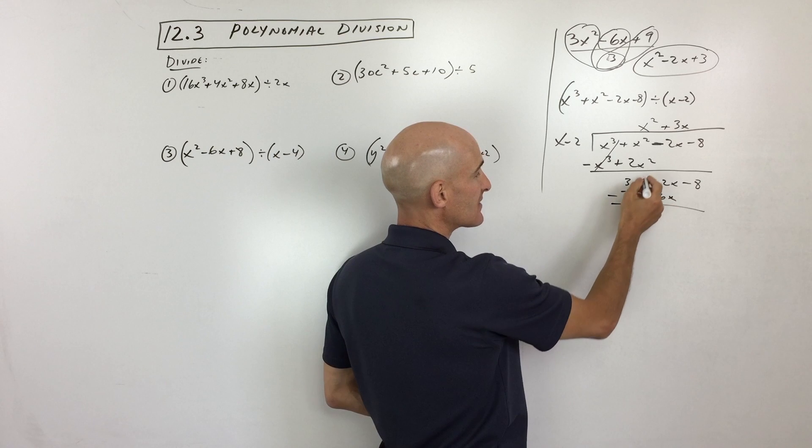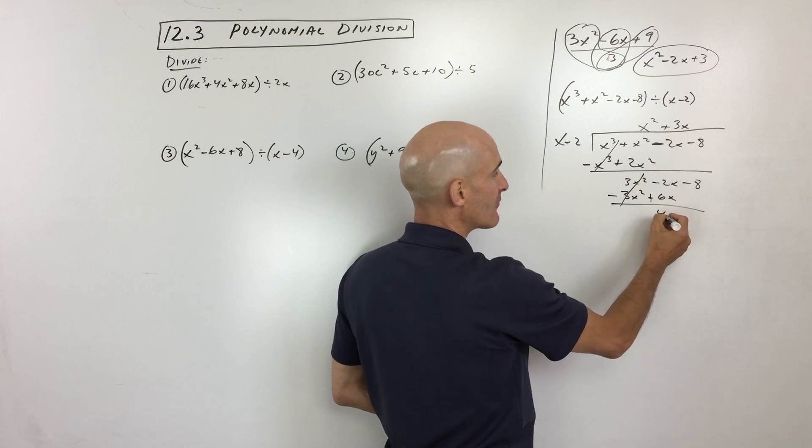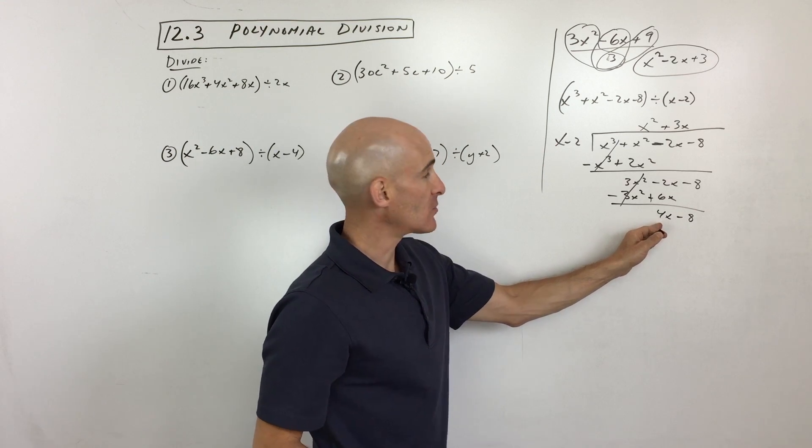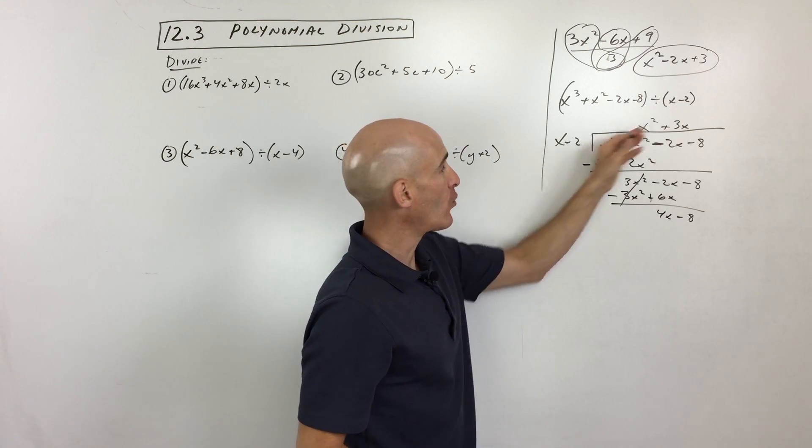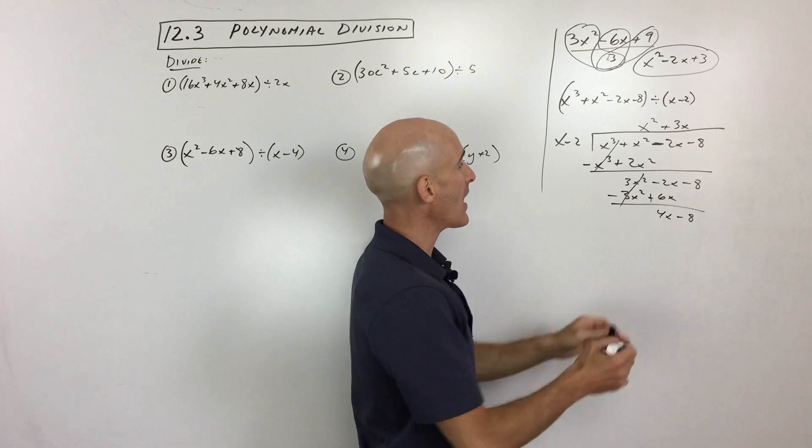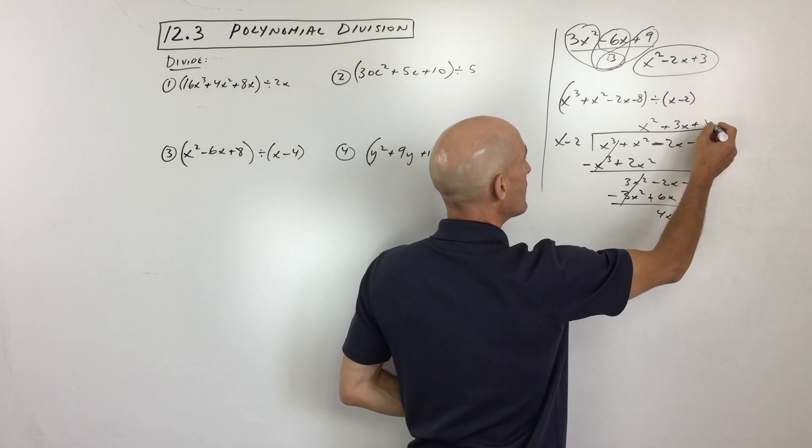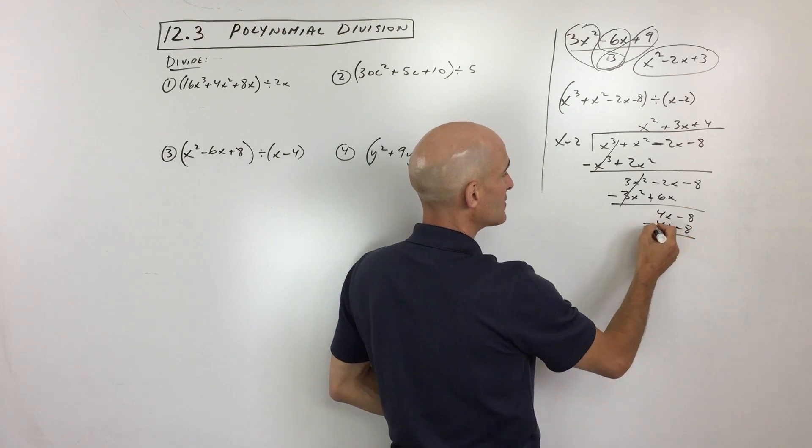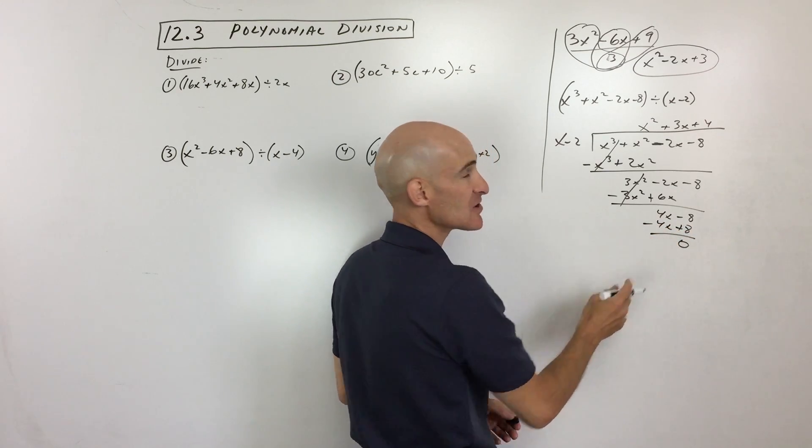But again, a lot of students like to change the signs to the opposite and add. They find that to be a little bit easier. And then how many times does x go into 4x? Or what's 4x divided by x? Or you could say, what times x gives you 4x? And that's going to be 4. If I distribute the 4 to both these terms, I get 4x minus 8. Change the signs to the opposite and add, and we get 0.